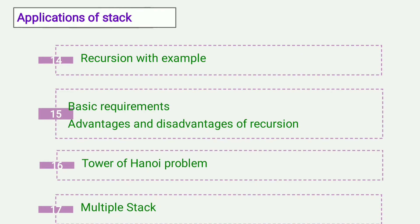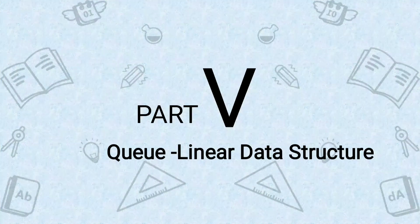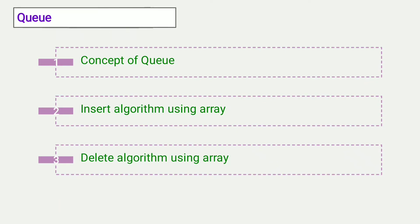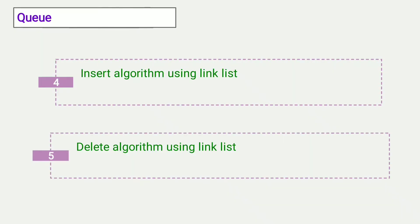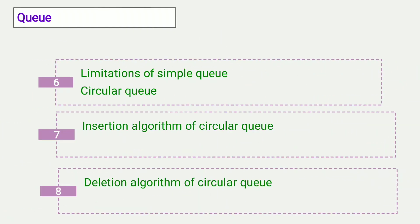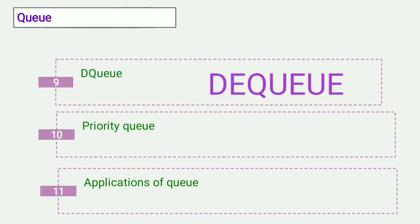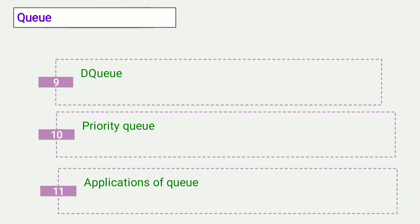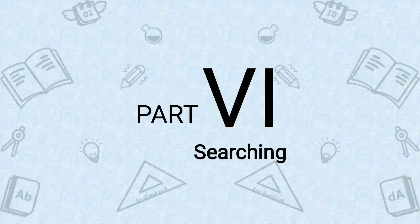In part five I will teach you queue, which is a linear data structure. In the first video I will teach the concept of queue. In the second and third videos I will teach insert and delete algorithms using array, and in the fourth and fifth videos using linked list. In the sixth video I will teach limitations of simple queue and how to overcome them using circular queue. In the seventh and eighth videos I will teach insertion and deletion algorithms of circular queue. In the ninth video I will teach double-ended queue (deque), and in the tenth video priority queue.